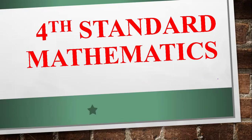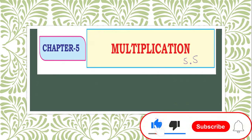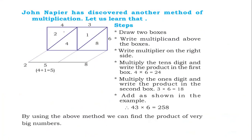In this video, I am discussing 4th Standard Mathematics Chapter 5 Multiplication Exercise 5.5. Before going to the exercise, John Napier discovered another method of multiplication. Let us learn this alternative method for multiplication, using 43 multiplied by 6 as an example.